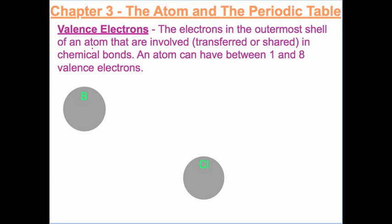Valence electrons are the electrons in the outermost shell of an atom. They're important because they're involved in chemical bonds. A chemical bond happens when electrons are transferred or shared between atoms. An atom can have between one and eight valence electrons.